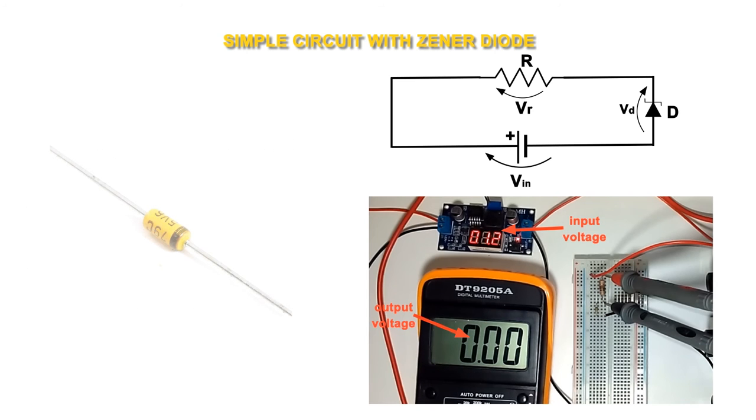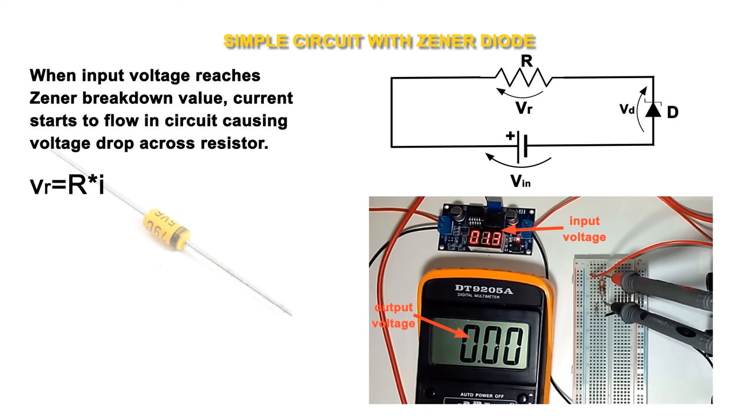When input voltage reaches zener breakdown value, current starts to flow in circuit causing voltage drop across resistor.